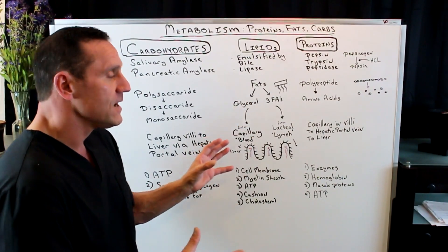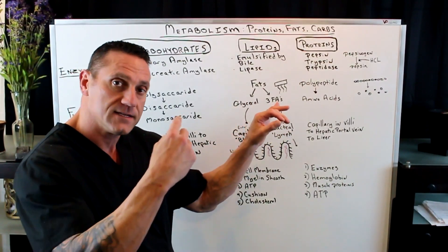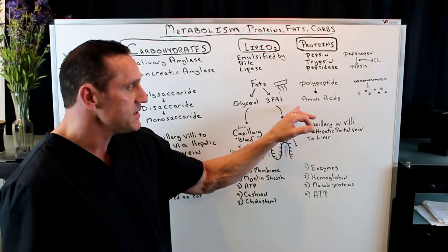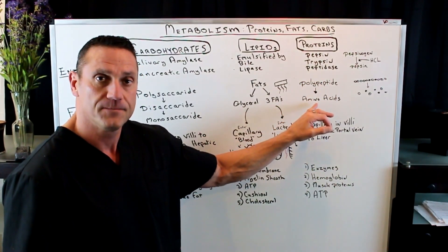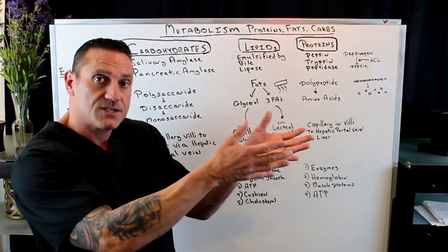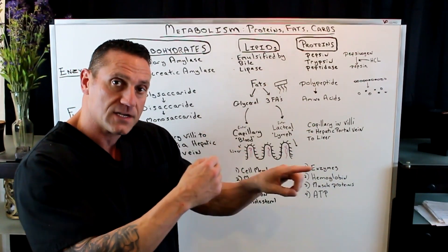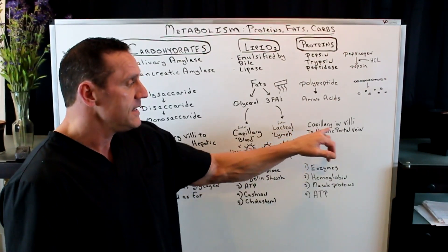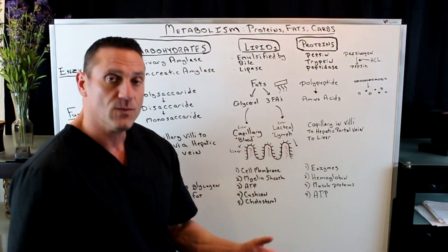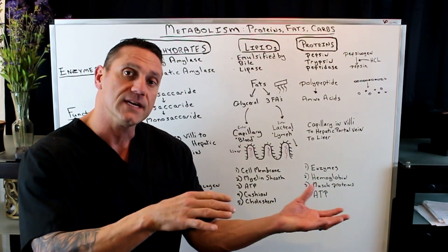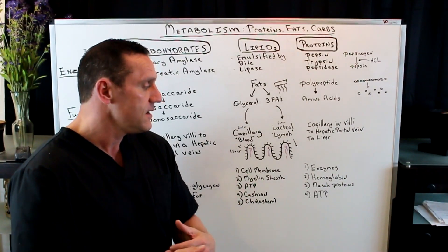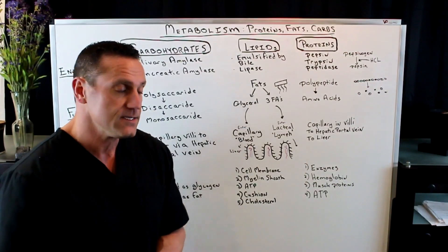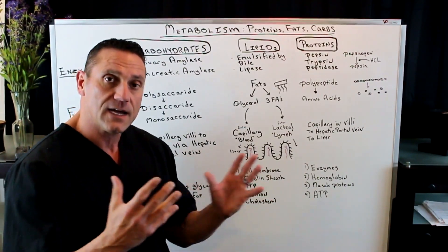How it's breaking it down: it wants to take a complex form — a polypeptide — and break it down into its simplest form, which is an amino acid. Once it gets through the stomach, it goes into the small intestines, where it gets absorbed in the capillaries and the villi to the liver through the hepatic portal vein. Once it gets into the liver, the liver processes these amino acids into many different uses.